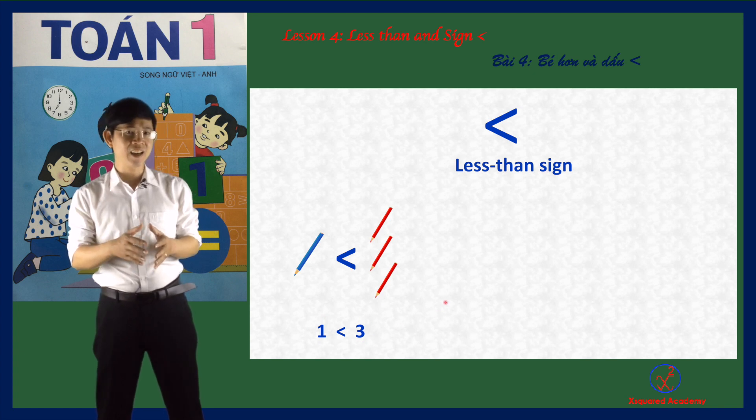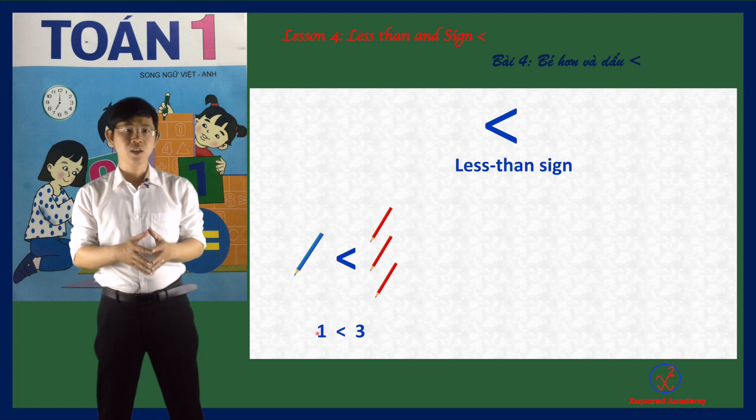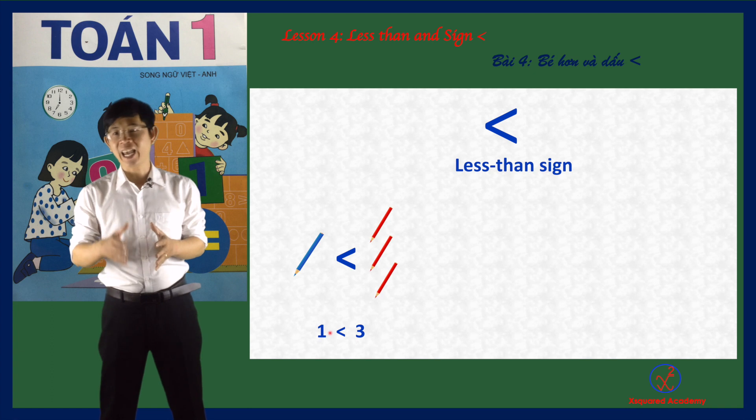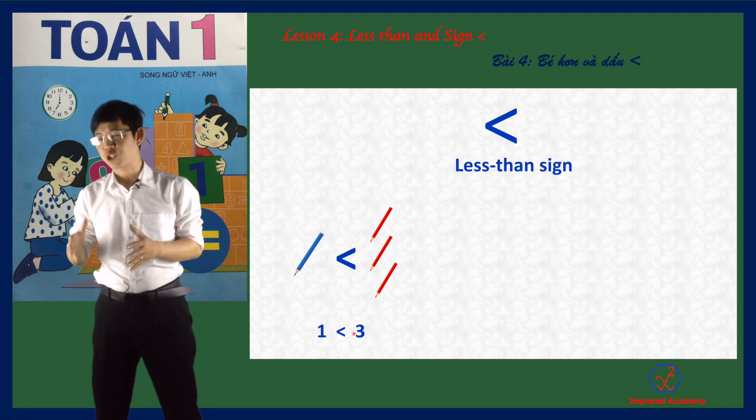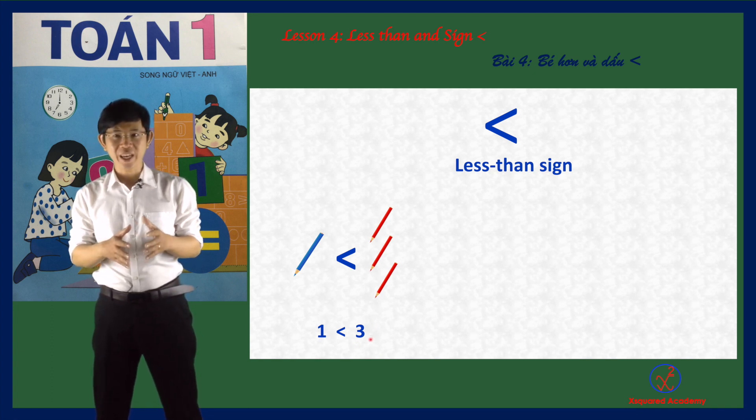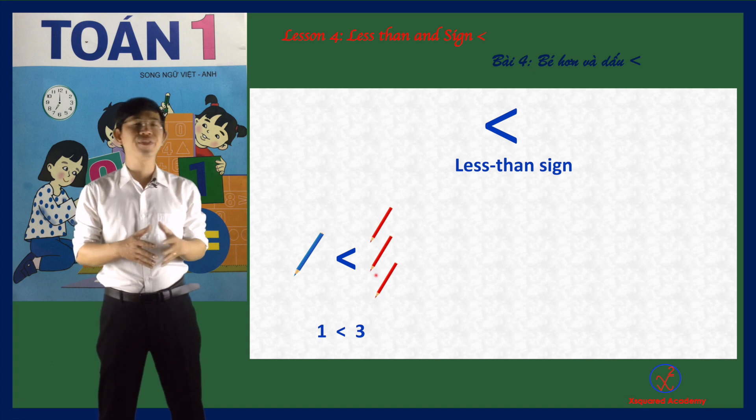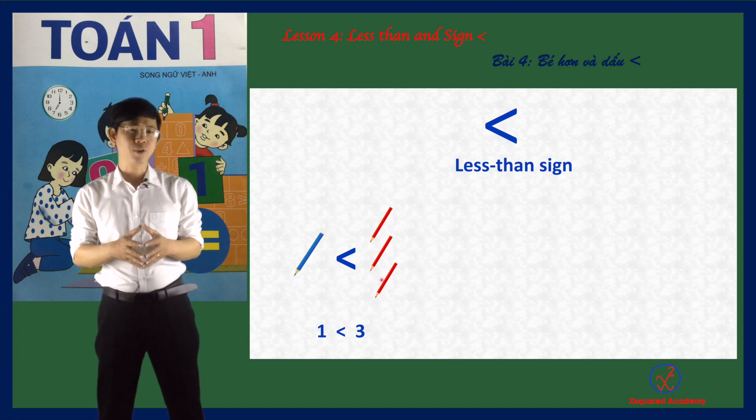One is a small number, so it is on the small side. And three is a large number, so it is on the big side.